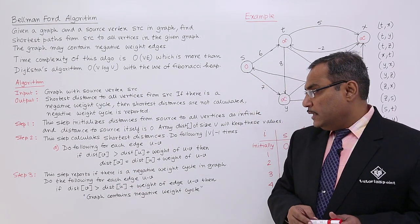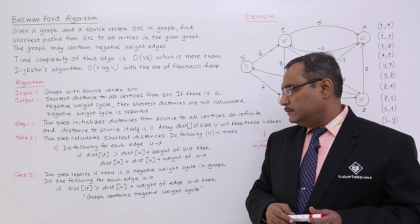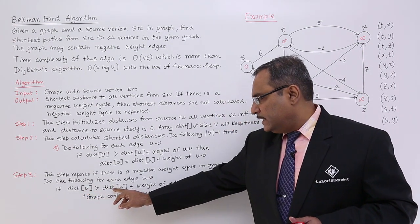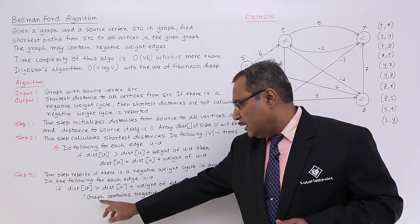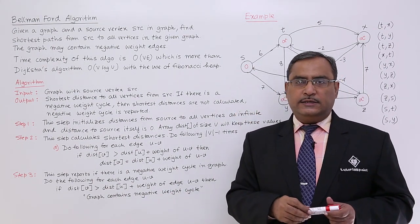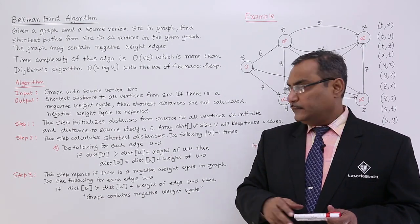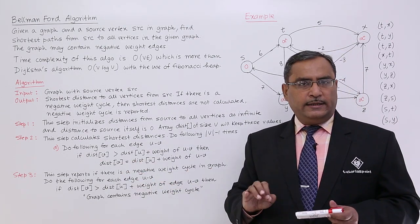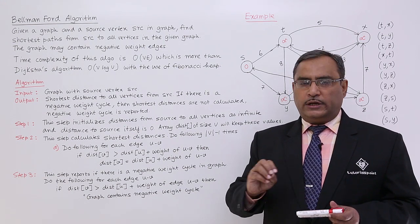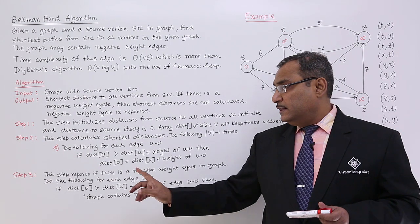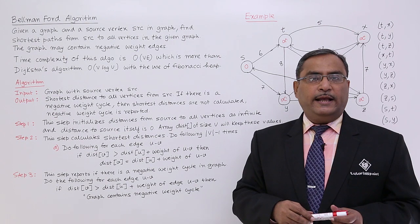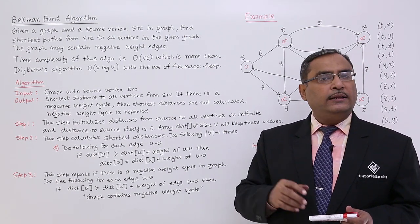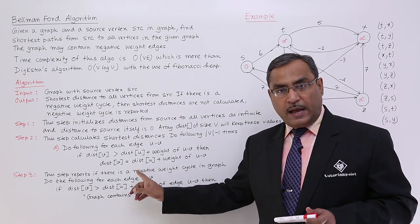Step 3 reports if there is a negative weight cycle in the graph. For each edge UV, if dist[v] is greater than dist[u] plus weight of UV, then the graph contains a negative weight cycle. Up to step 2, if there is no negative weight cycle, we have the shortest path from the source to all other vertices. Step 3 simply reports that the graph has a negative weight cycle, because using such a cycle multiple times could indefinitely reduce path lengths.